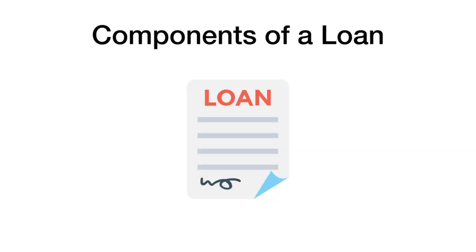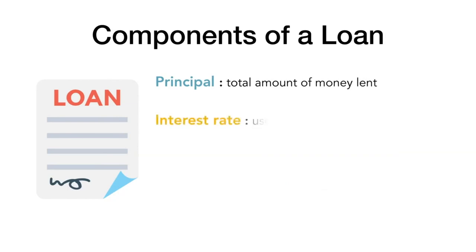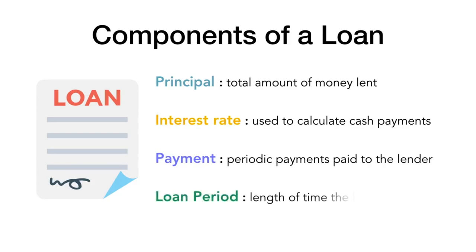Let's start by looking at the components of a loan. First, we have the principal amount, which is the total amount of money that is lent. Next is the interest rate, which is specified in the loan agreement and is used to calculate the cash payments the borrower must make to the lender in exchange for using the borrowed money for that period. The next component is the payment, which are the periodic payments the borrower will pay to the lender. Lastly, there is the loan period, or the length of time that the loan is outstanding.